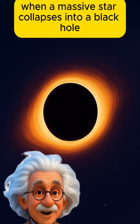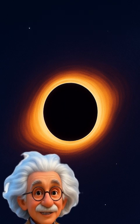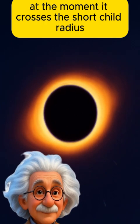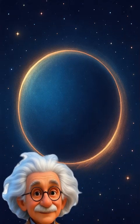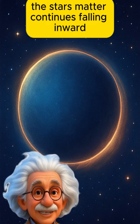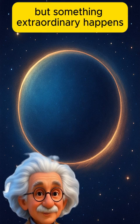When a massive star collapses into a black hole, it doesn't suddenly change at the moment it crosses the Schwarzschild radius and forms a black hole. The star's matter continues falling inward, but something extraordinary happens.